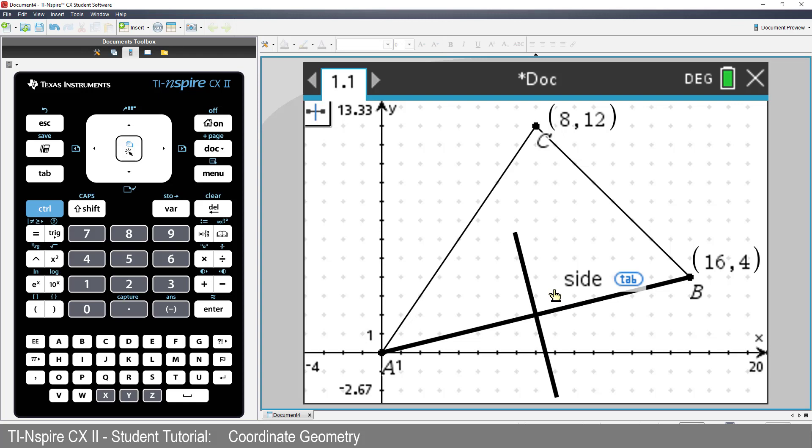Notice that our tool is still active, so we can go straight onto Side BC and also onto Side AC. It looks like the perpendicular bisectors meet at a single point.